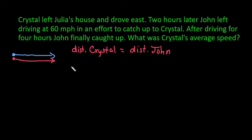So as always with these, the easiest thing to do is to set this up as a little table or a spreadsheet so that you have all of the information. So we have Crystal and we have John.